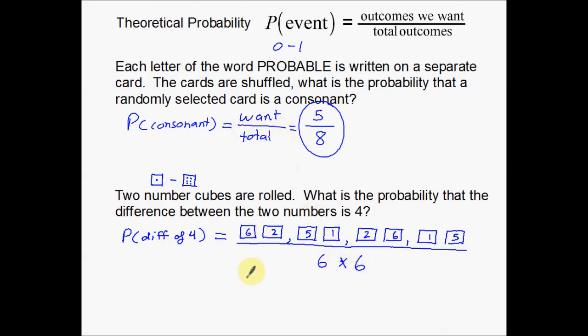This is going to be 4 over 36. Four possible combinations of dice that give me a difference of 4 over a possible 36 dice rolls that could happen, for a total of 1 over 9. One out of every nine tosses of these two number cubes is going to give me a difference of 4.